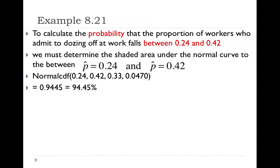That concludes the chapter on sampling distributions and calculating probabilities. We've seen two types of questions: those involving sample means and those involving sample proportions. Questions involving sample means use the sampling distribution of means, while those involving sample proportions use the sampling distribution of proportions. What changes greatly between the two is the calculation of the standard error — you've got a very different formula in each case. Other than that, the setup is very similar, and the answer is always found using normalCDF.